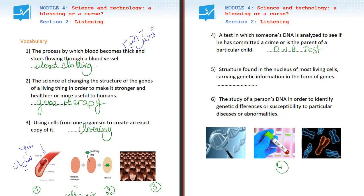Number five. A structure found in the nucleus of most living cells, carrying genetic information in the form of genes. What do you call it? It's a chromosome. Good.